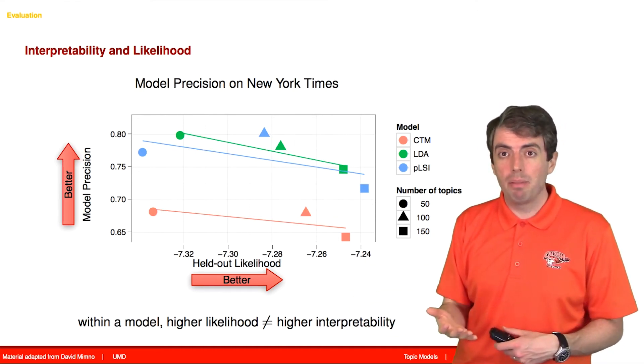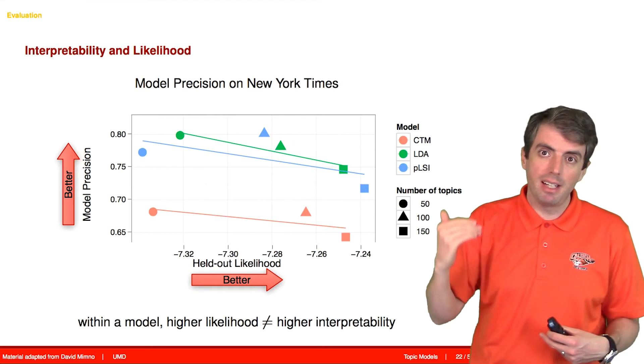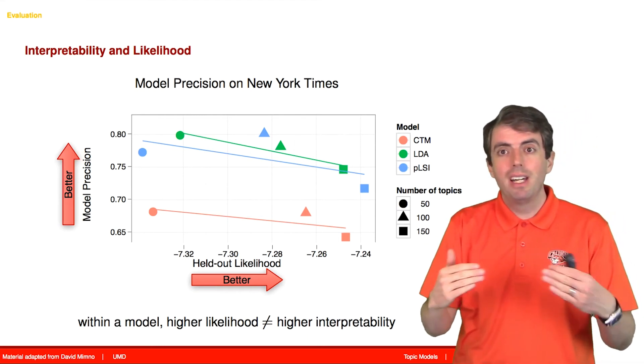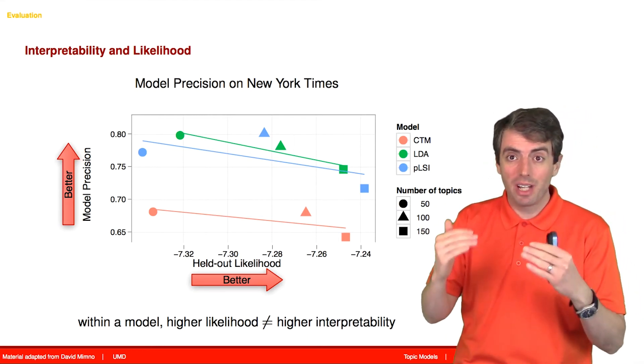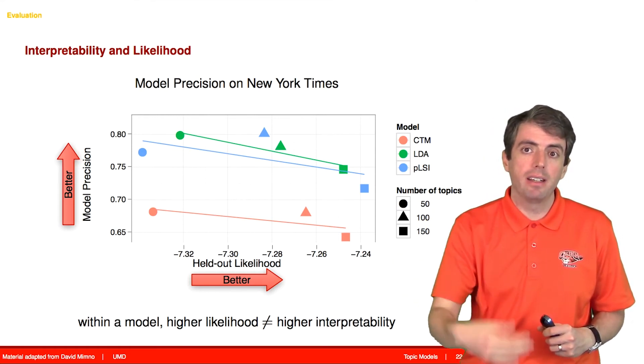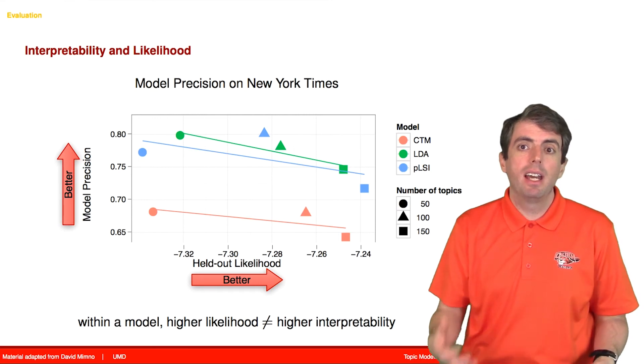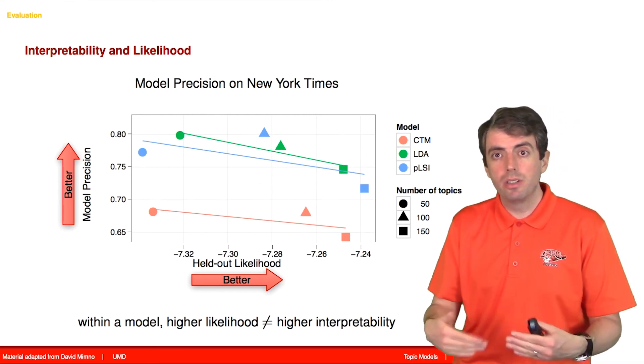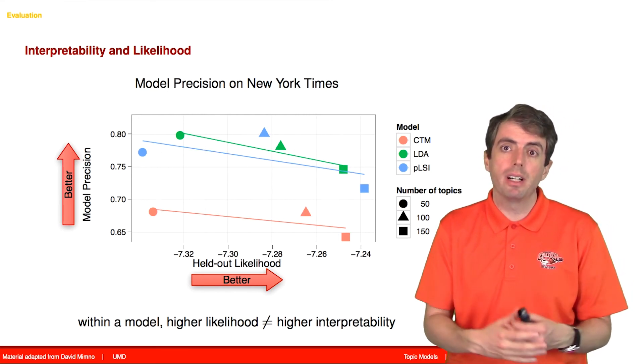But what was actually happening is that once you got beyond a certain threshold of an actual topic model that made some amount of sense, the topic models were getting more and more complicated, they were getting confusing to humans, and not necessarily doing a good job of telling a story about what's going on inside the dataset.